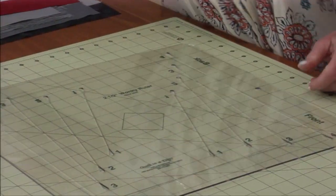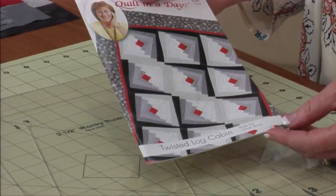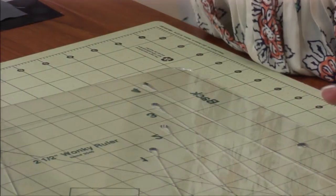For today's pattern we're going to be doing the twisted log cabin and I'm always going to be using the front side of the ruler. So let's get started with that.